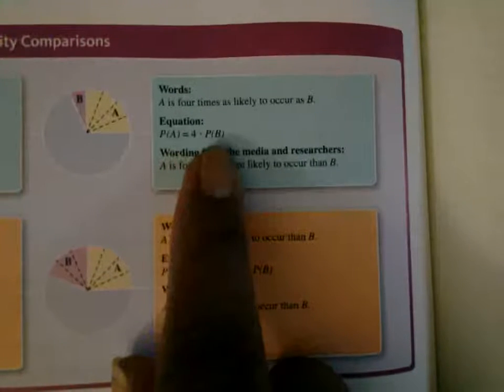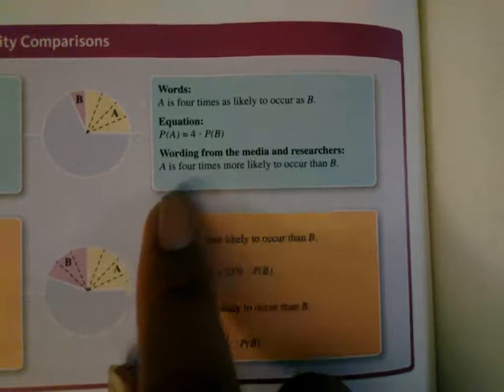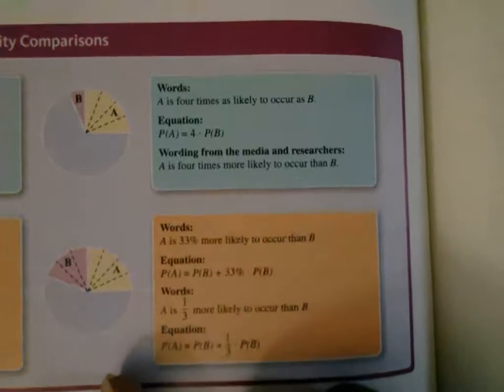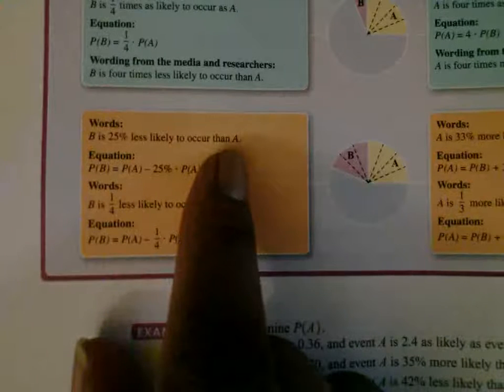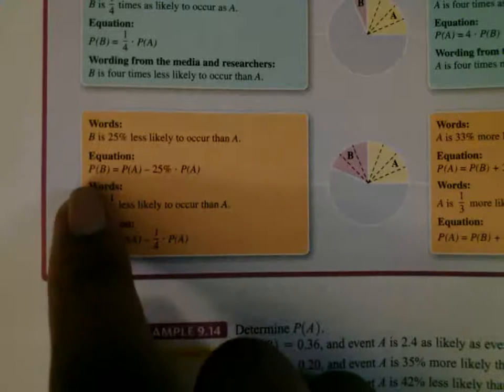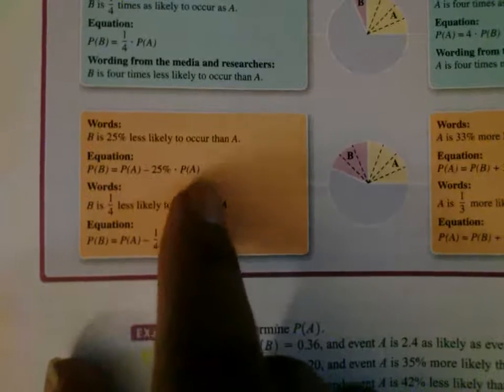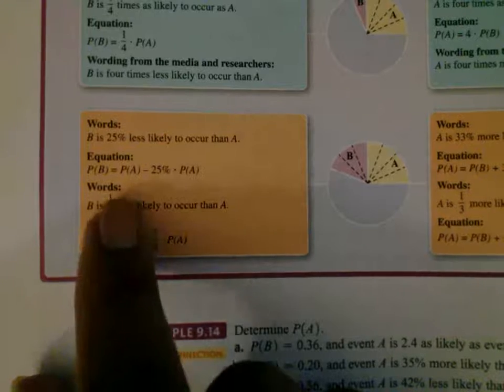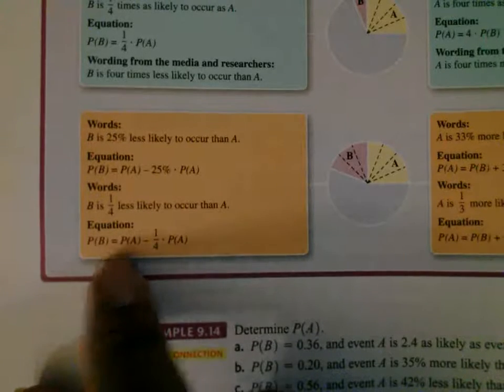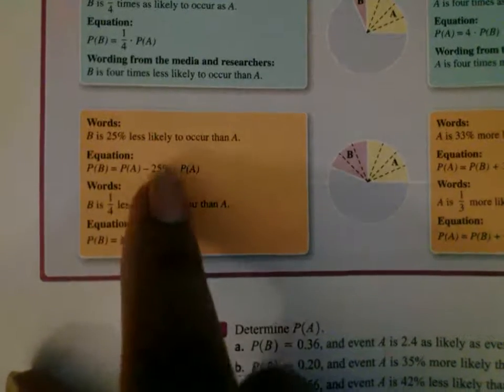The probability of event A equals four times the probability of event B. From media and researchers, if this was worded, it would be 'A is four times more likely to occur than B.' Next, 'B is 25% less likely to occur than A' means the probability of event B equals the probability of event A minus the product of 25% and the probability of event A. You take one-fourth, or 25%, of the probability of event A and then subtract it. In words, 'B is one-fourth less likely to occur than A.' These two equations are essentially the same.